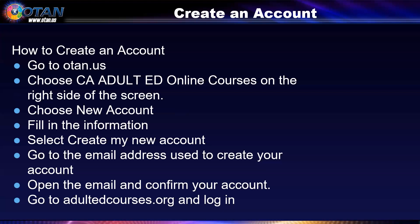First, go to OTAN.us and choose California Adult Ed Online Courses on the right side of the screen. Choose New Account and fill in the information. Select Create My New Account. Go to the email address used to create your account, open the email, and confirm your account. Then go to adultedcourses.org and log in. If you have previously created an account but cannot remember your username or password, select the Forgotten Your Username or Password prompt to try to retrieve your information.